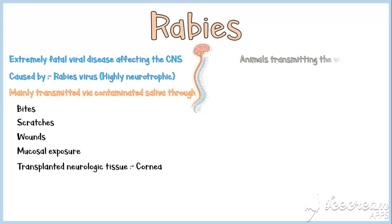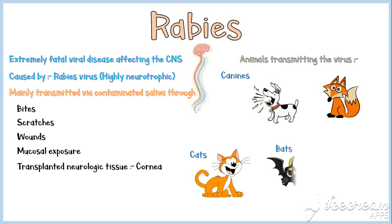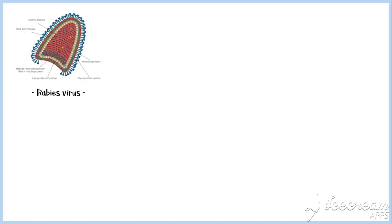Rabies can be transmitted by a wide range of animals. Major ones include canines like dogs and foxes, cats, bats, raccoons, or any other kind of mammal.